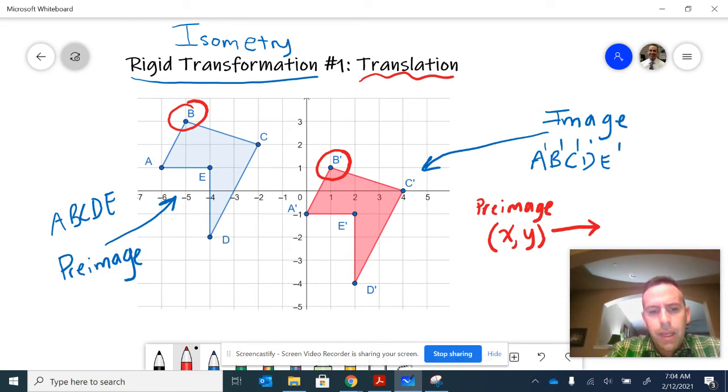Well, you can see if you count the spaces carefully, that B shifted one, two, three, four, five, six places to the right. So that's an X movement of positive six. And it also shifted down one, two spaces.